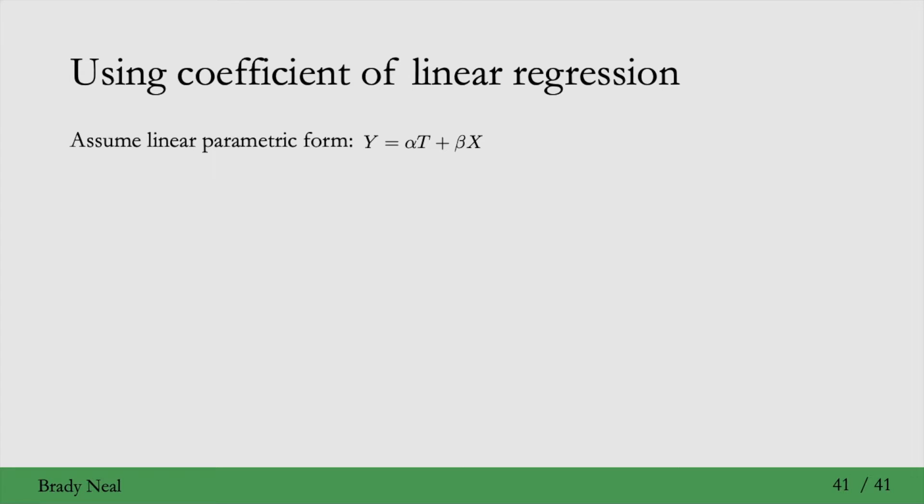Then, given this assumption, we just run linear regression. We regress Y on T and X to estimate alpha and beta here. Estimates have hats on top of them. And if we do this, we get alpha hat equals 0.85, the exact same estimate we got in the previous slide when we used the adjustment formula. And we have code for this on the GitHub that's linked in the corresponding part of the book.